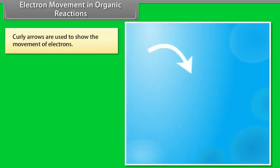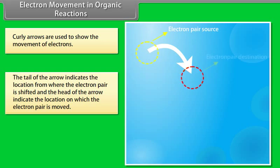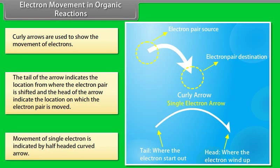Electron movement in organic reactions: curly arrows are used to show the movement of electrons. The tail of the arrow indicates the location from where the electron pair is shifted, and the head of the arrow indicates the location to which the electron pair is moved. Movement of a single electron is indicated by a half-headed curved arrow.